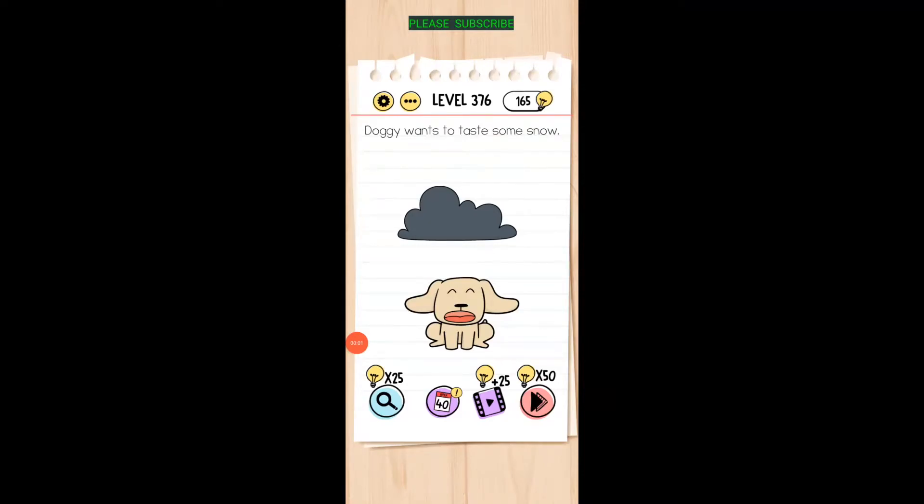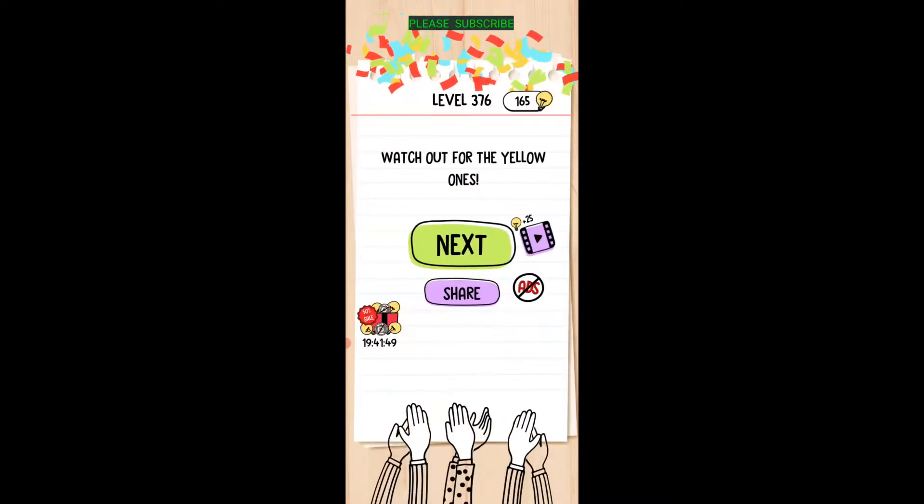Doggy wants to taste some snow. Tap on the cloud. Raise the cloud up, the higher it gets, and then kind of tap on the cloud I guess, and there you go. So raise it up a little higher.